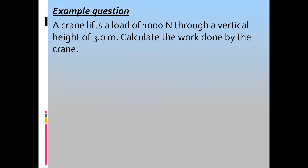A crane lifts a load of 1000 Newton to a vertical distance, a height of 3 meters. Calculate the work done. A force of 1000 Newton is lifting the object over 3 meters, so the work done is 3000 joules. 3000 joules is the right answer.